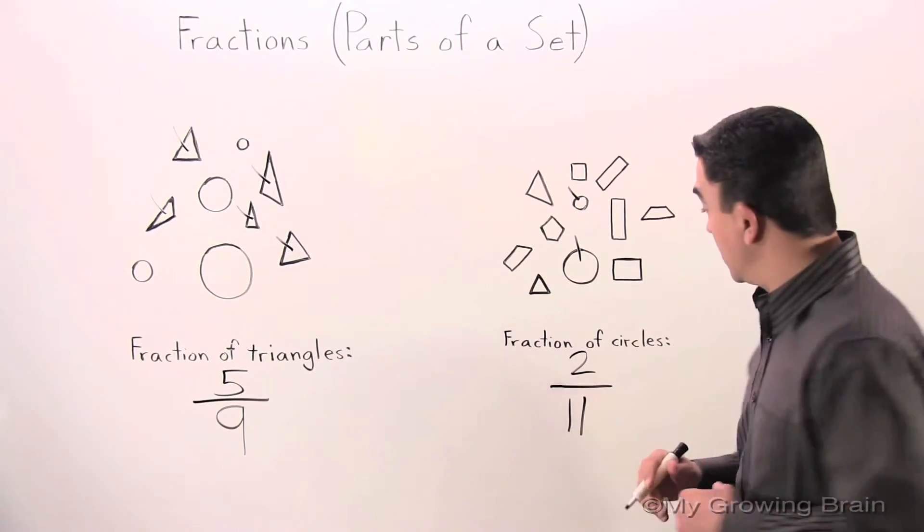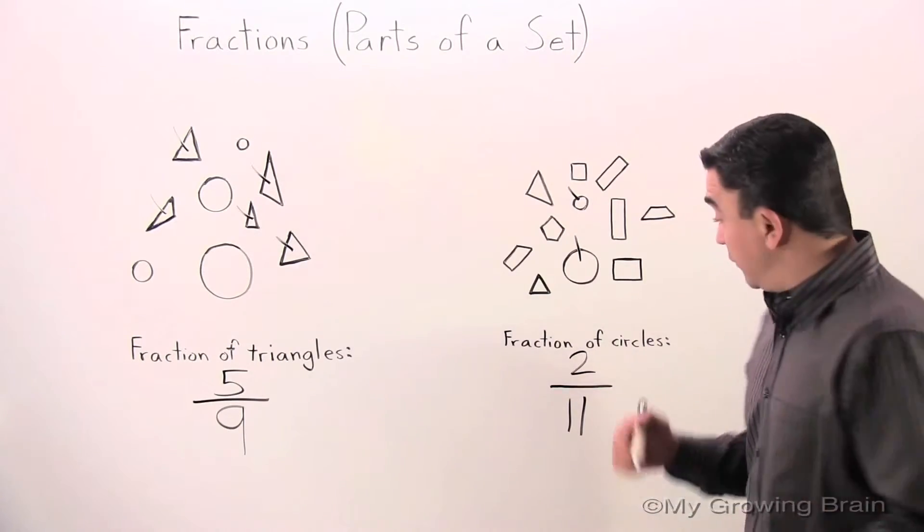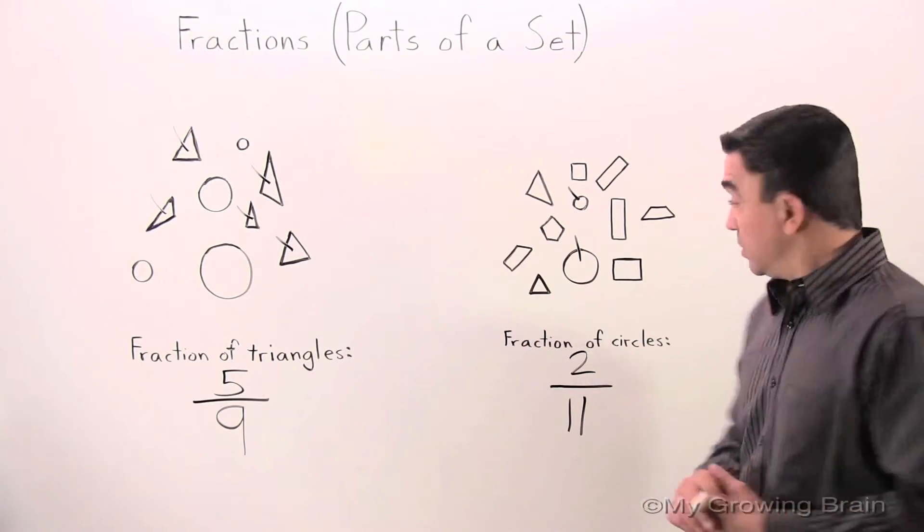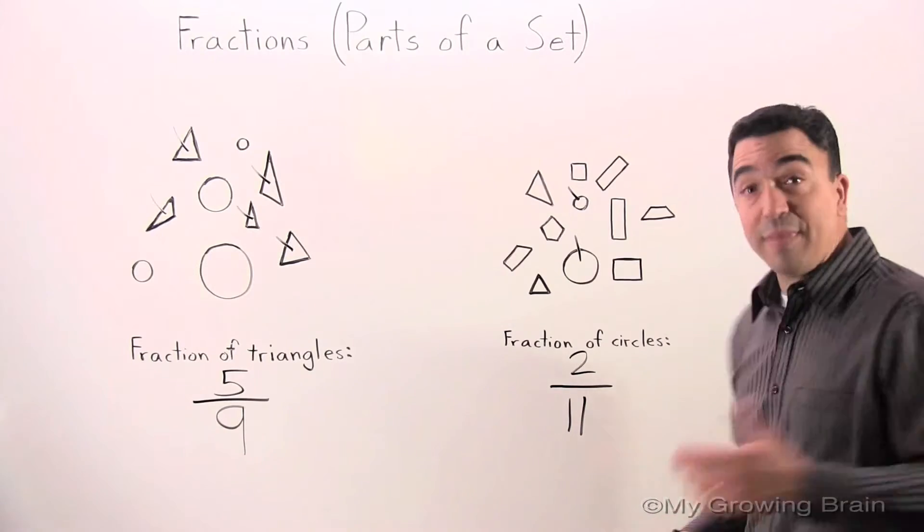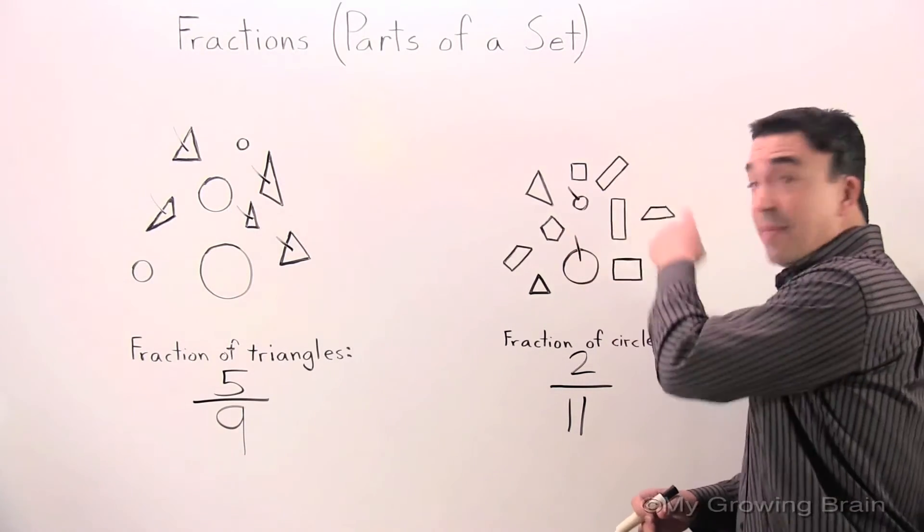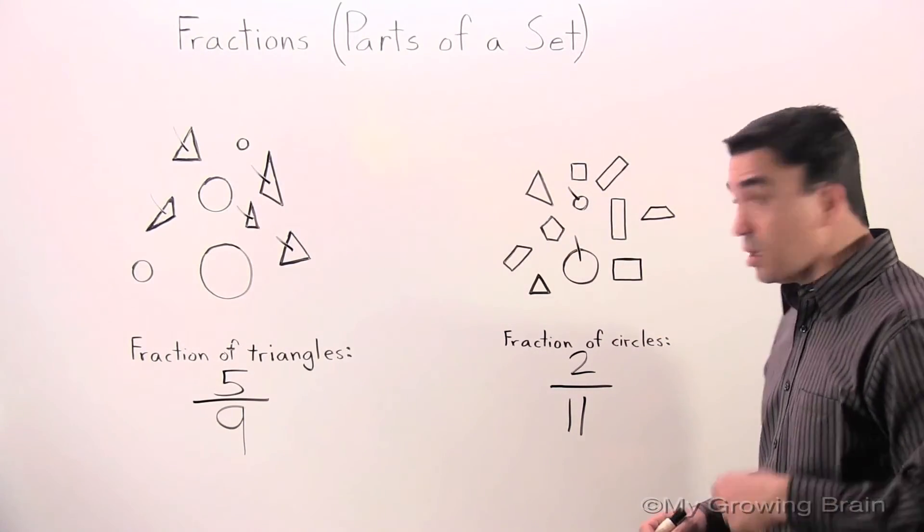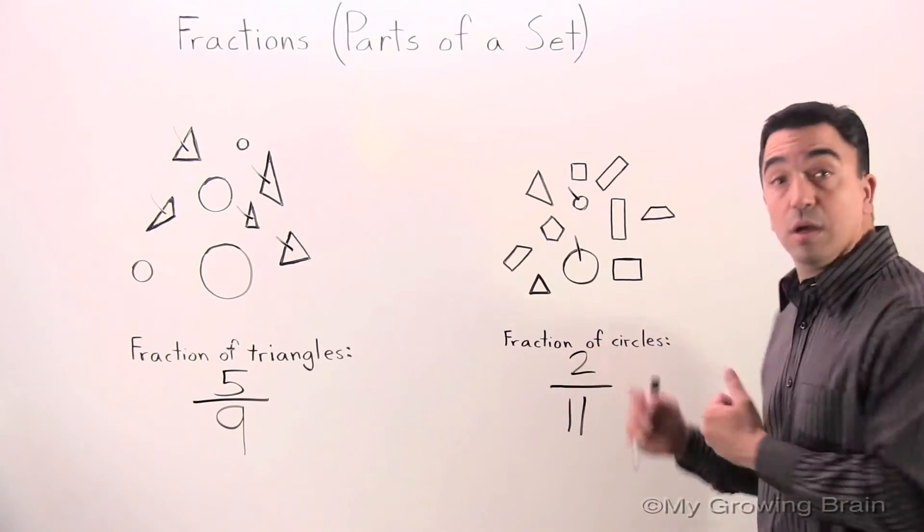Alright. The fraction is 2 elevenths. So that means out of 11 shapes in this set, 2 of them are circles.